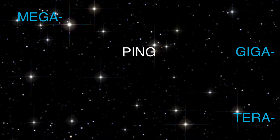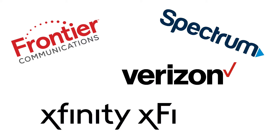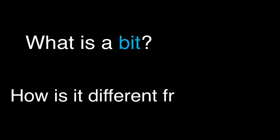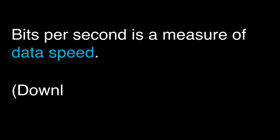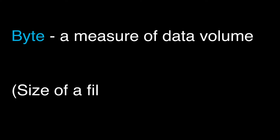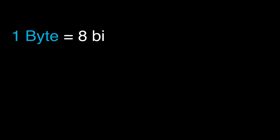First let's start with ISP — this stands for internet service provider, basically who you're paying to receive internet at your house and or your phone. Speeds and data are measured in bits. A bit is a tiny unit of data measured as bit rate — the number of bits transmitted per second. Bits per second is a measure of data speed. Bytes are a measure of data volume — the size of a file or storage space. One byte is made up of eight bits.